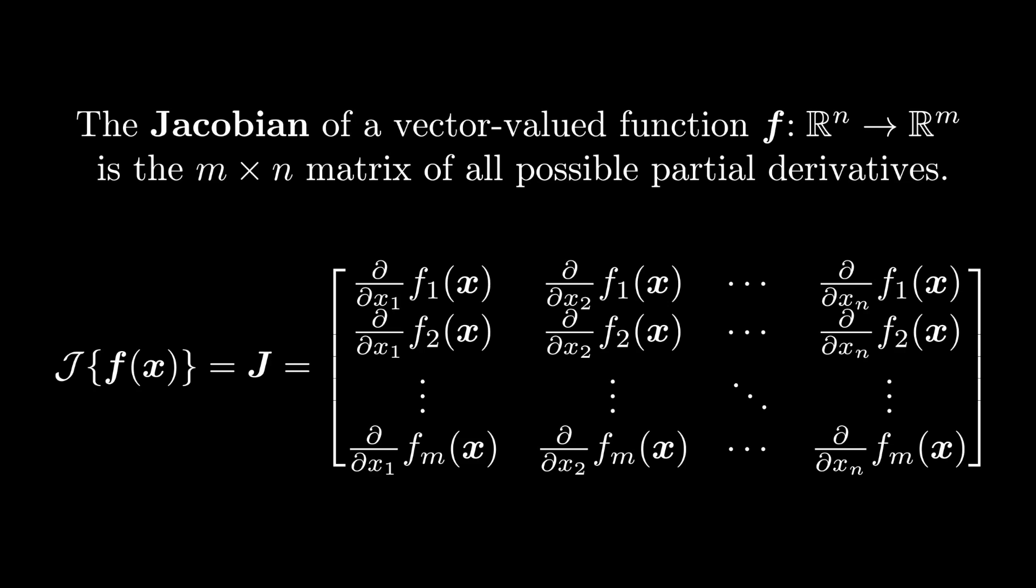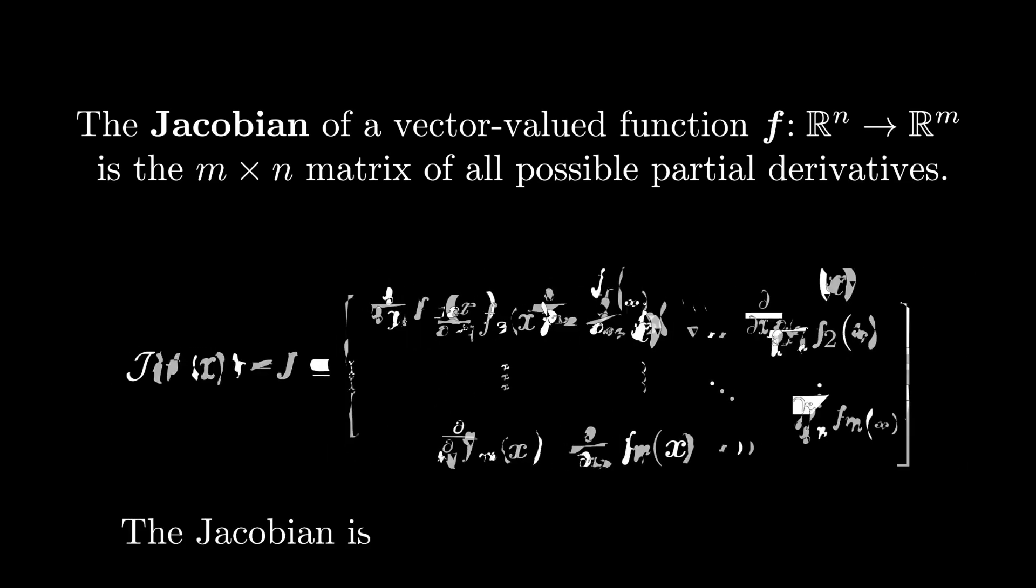Now you can see why the gradient needs to be a row vector, because in the case where there's only one output, the matrix only has one row. To that end, one way to think about the Jacobian is as the matrix of all the gradients stacked up.